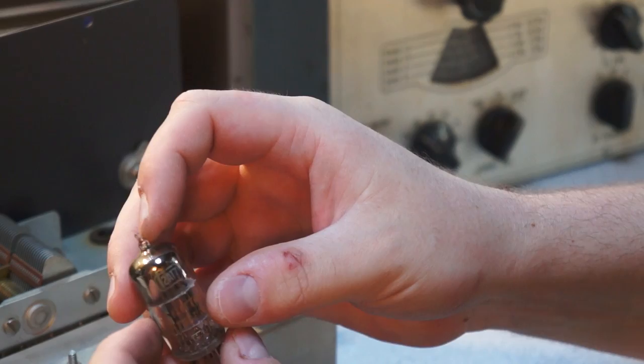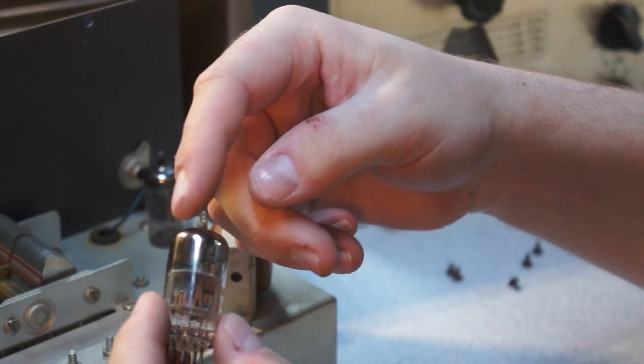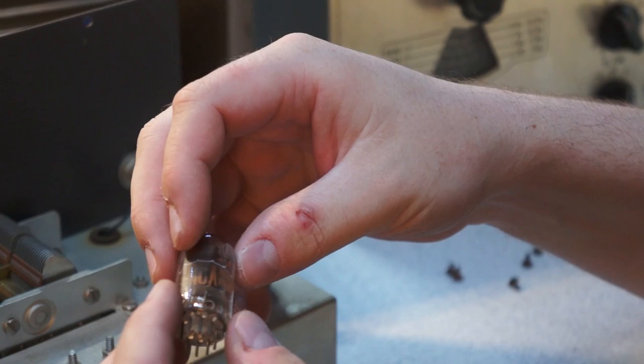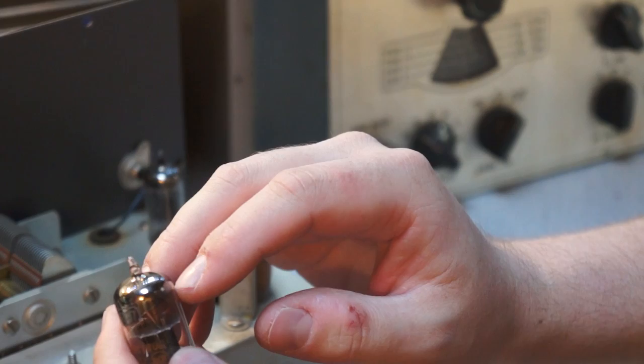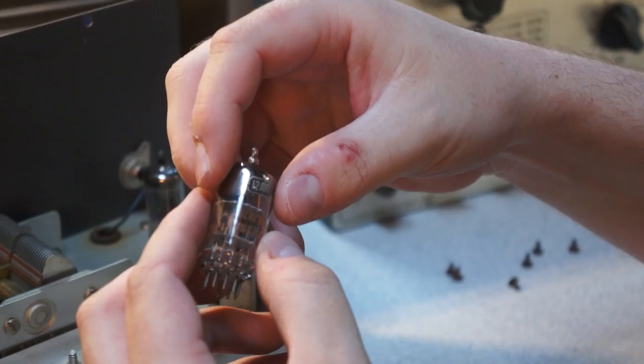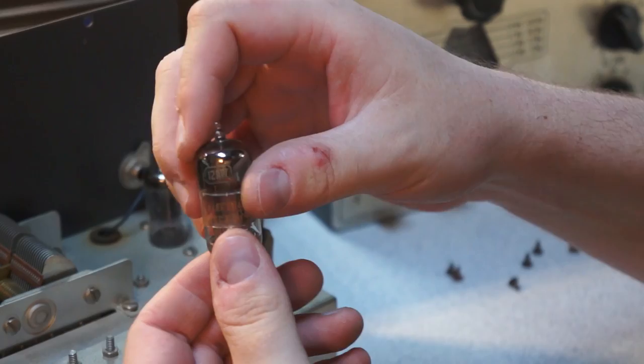So what it does is it actually effectively increases the vacuum in the tube over time, because the free gases are actually being absorbed into the getter. And there's a number of different materials you can use for the getter that are good for adsorbing. It adsorbs it, it doesn't absorb it. It's good for scavenging different gases depending on the different getter compositions. One of the things you can do is if you have a tube and there's no getter and there's this white powdery deposit on the interior of the glass, what that means is that the vacuum in the tube has been lost.